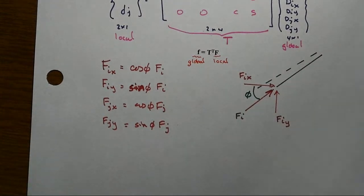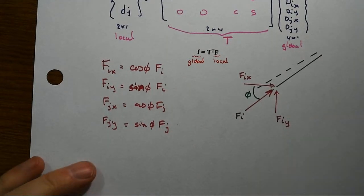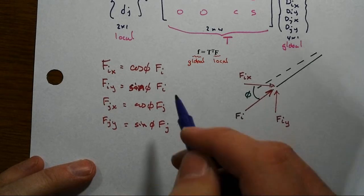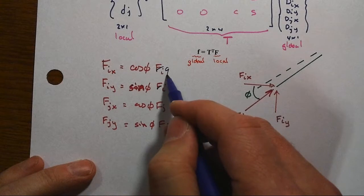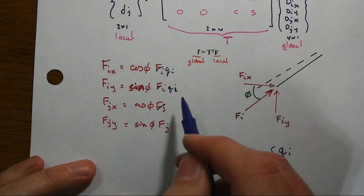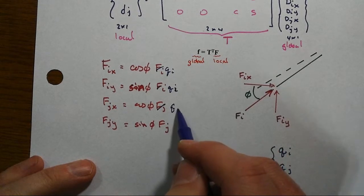I do that for both ends and note what's going to happen here, again a little bit different than what we were setting up before. This time we only have two local forces. We were actually calling these q before, the qi and the qj.